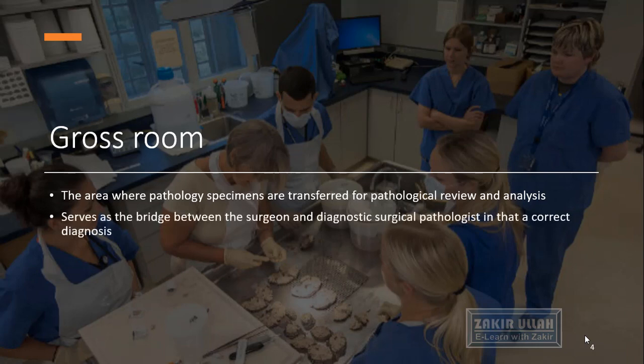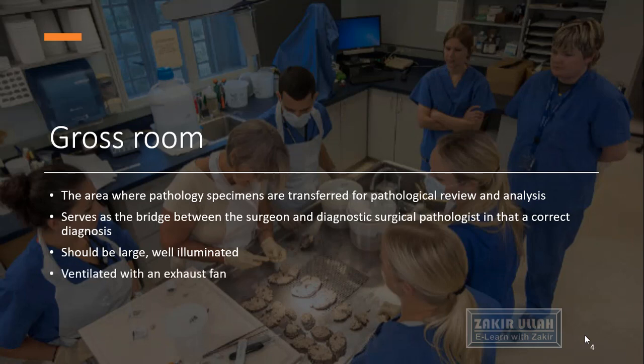The gross room is the area where surgically removed pathology specimens are transferred and reviewed for pathologic investigation, analysis, and gross examination. The gross room serves as a bridge — a connection — between the surgeon, the surgical unit, and the diagnostic surgical pathologist for correct diagnosis, proper diagnosis, and treatment. The gross room should be large, well-lit, and well-ventilated, having exhaust fans.